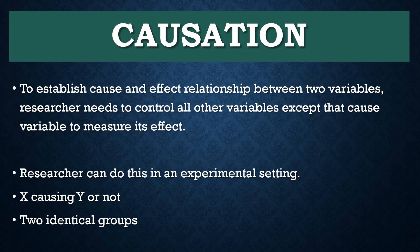Now, to establish causation — a cause and effect relationship between two variables — the researcher needs to control all other variables except the one variable which is the cause variable. To measure the cause and effect relationship, researchers can do this in an experimental setting to examine whether X is causing Y or not.